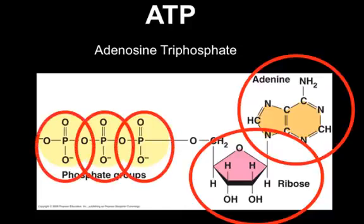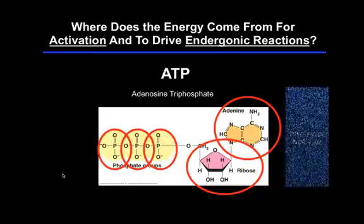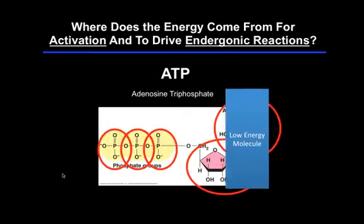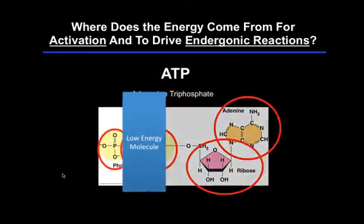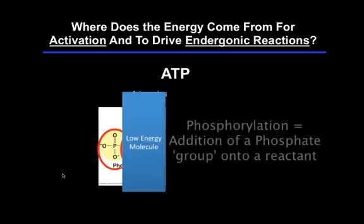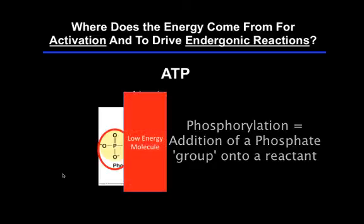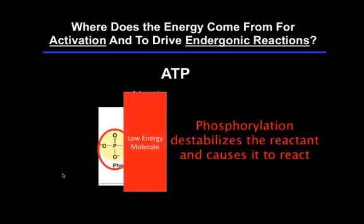With the help of enzymes, cells will detach this last phosphate group and attach it to reactants in a reaction. We say that the reactants are phosphorylated. The phosphate group greatly destabilizes the reactant, which increases its chemical energy and forces the reactants to react.